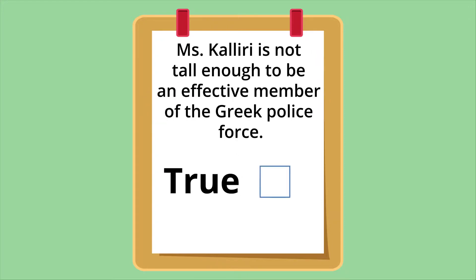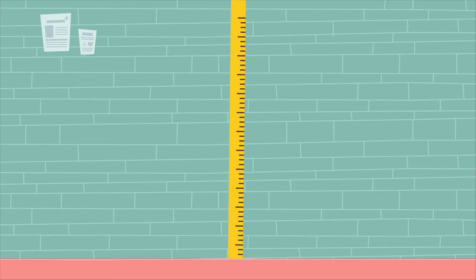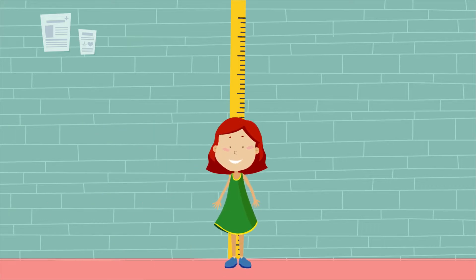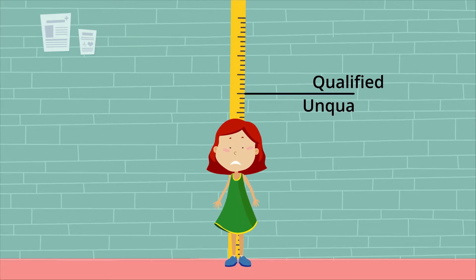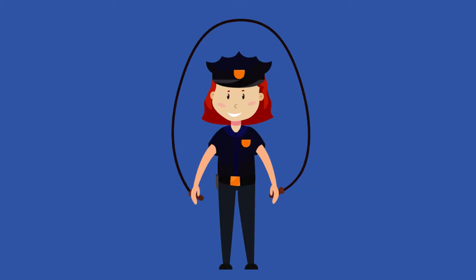Here, the statement 'Ms. Kaliri is not tall enough to be an effective member of the Greek police force' was shown not to be straightforwardly true. The court's decision was based on its recognition that height does not come in categories that neatly map onto abilities. That is, being 1.7 meters tall does not automatically make someone qualified to perform the necessary tasks, and being 1.68 meters tall does not automatically make someone unqualified.